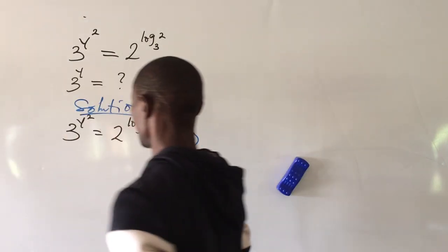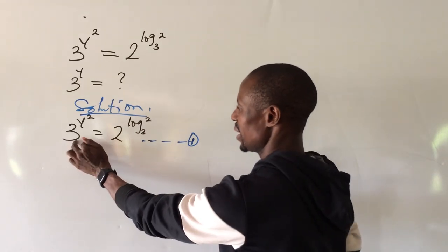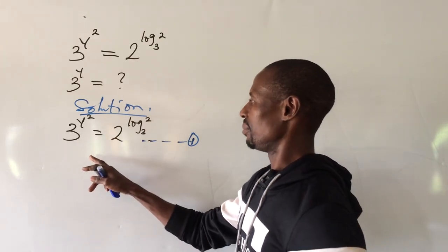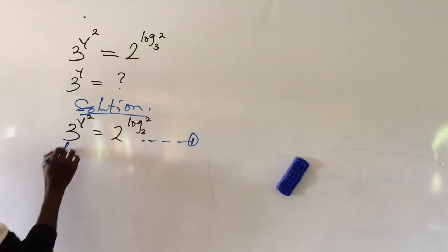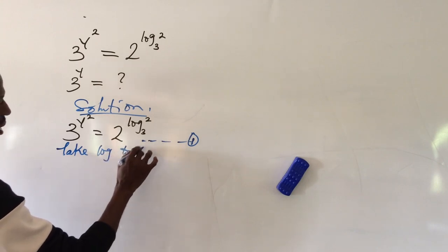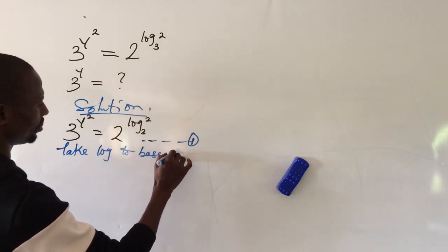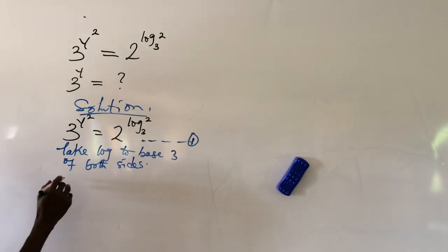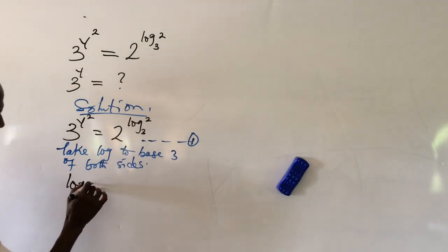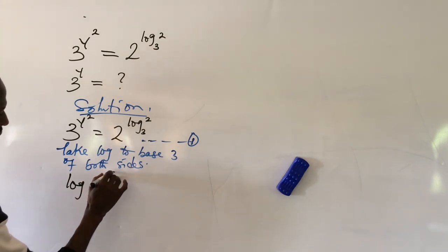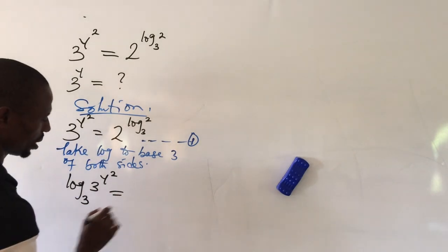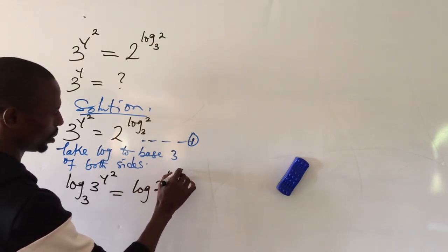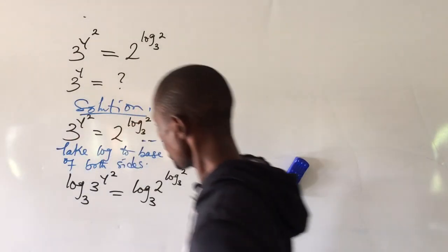From equation one, if you look carefully, we are having 3 as a base here and we're having log 2 base 3. So if I take log to base 3 of both sides, this is going to give us: log of (3 to the power of y) all to the power of 2, base 3, equals log of (2 to the power of log 2 base 3), base 3.